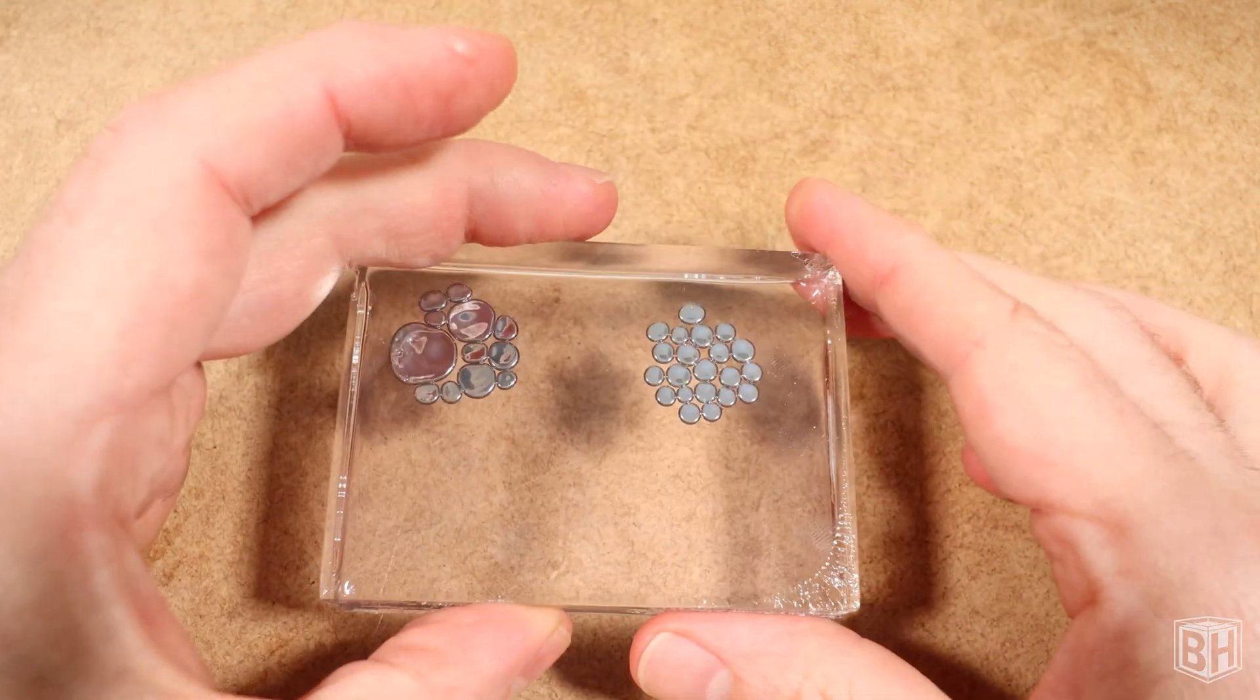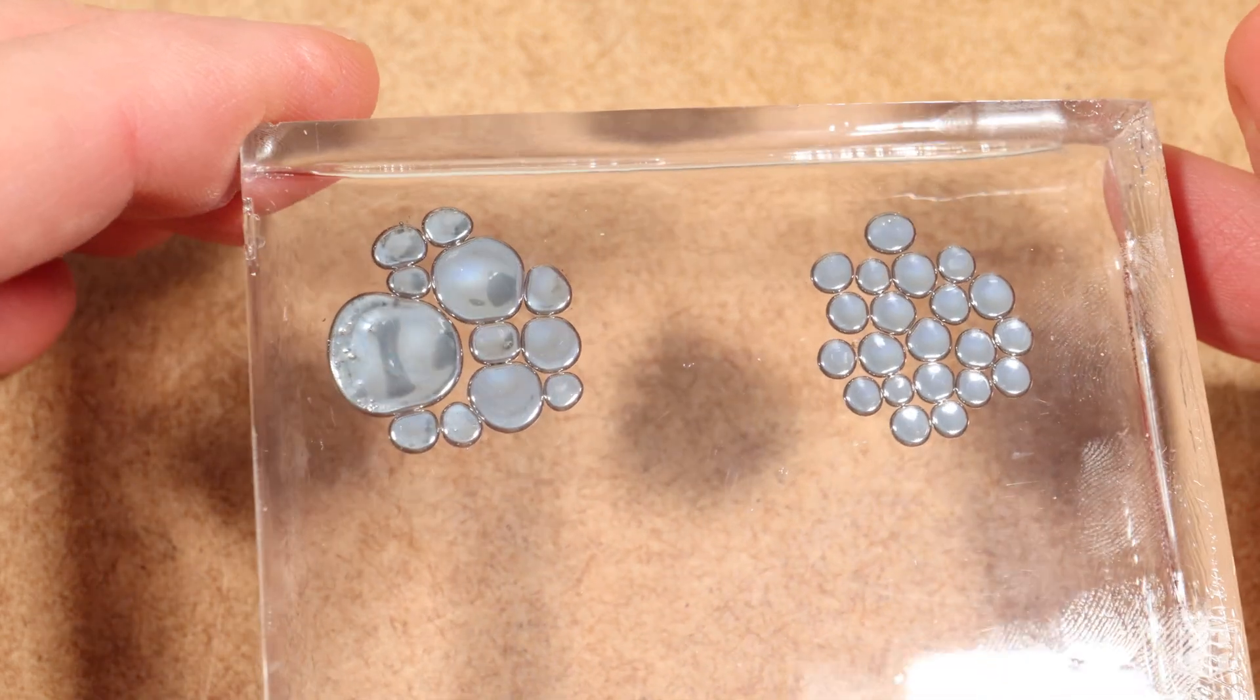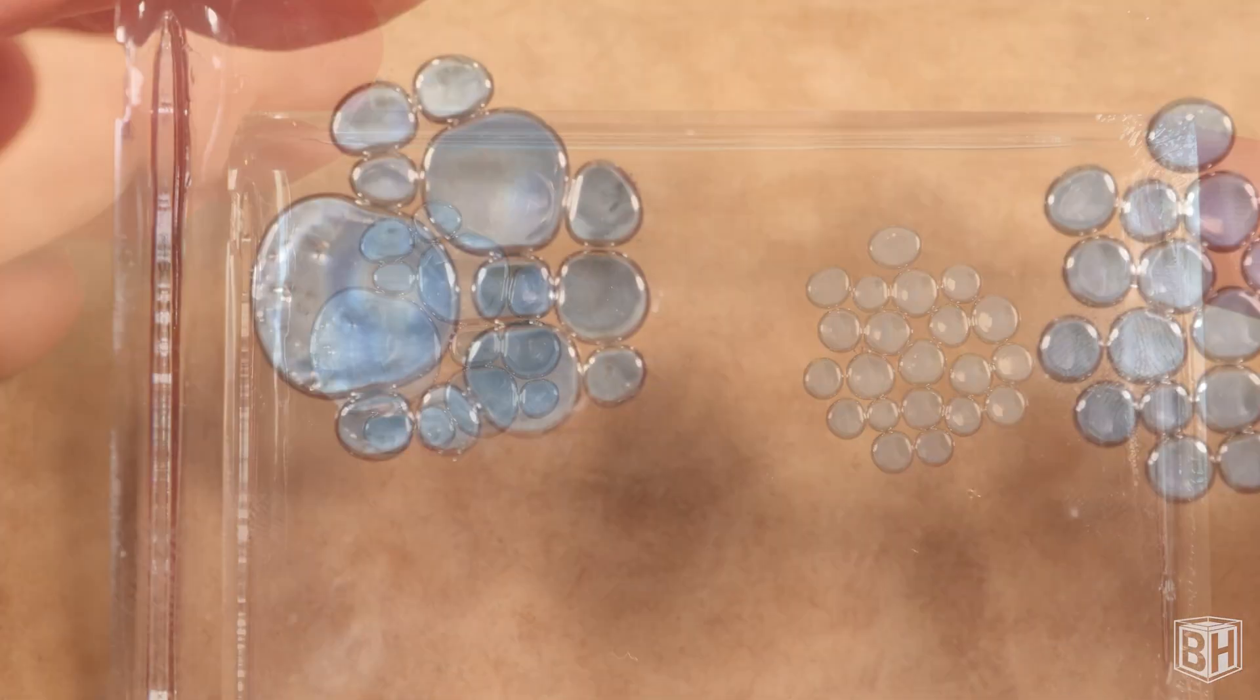Turning the piece over, I really like how it looks on the other side as the mercury is flat and the shapes of the drops are more distinctive. It's also remained shiny.